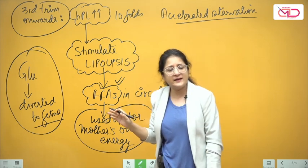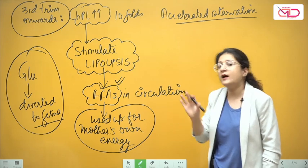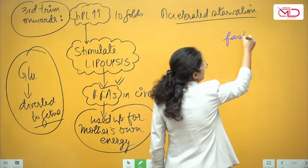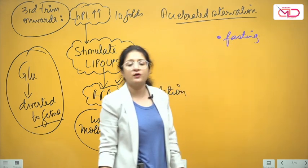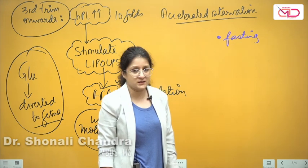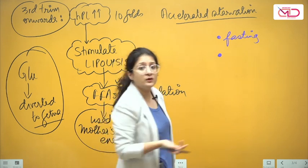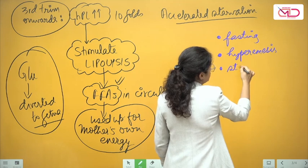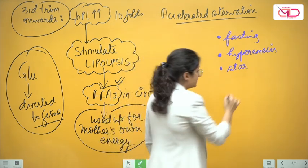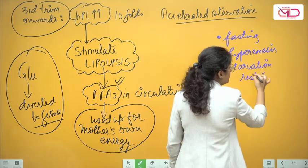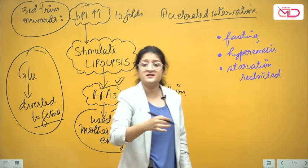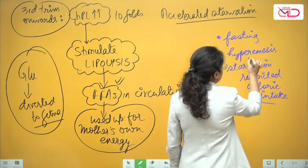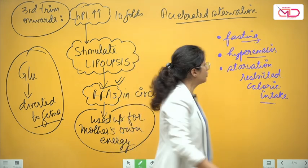If she is taking adequate caloric intake, these metabolic changes will not adversely affect her. The problem comes if a woman is fasting in pregnancy — pregnant women should not fast. Similarly, if she is unable to tolerate oral intake due to hyperemesis — excessive vomiting during pregnancy — or if she has dramatically restricted her caloric intake. Pregnancy is not a state where one needs to restrict calories; it is a state where extra calories are needed.